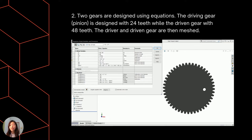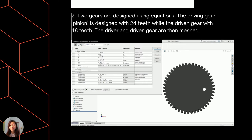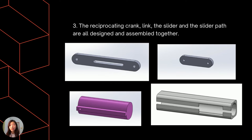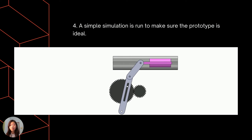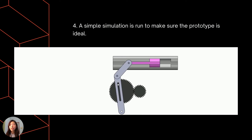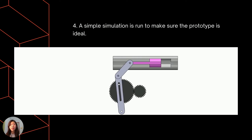The driving gear, as the pinion, is designed with 24 teeth while the driven gear has 48 teeth. The driver and driven gears are then meshed together. Then the reciprocating crank link, also known as the connecting rod, the slider, and the slider path are designed and assembled together. A simple simulation is run to make sure the prototype is able to function. Once the design is finalized, a physical prototype is constructed.